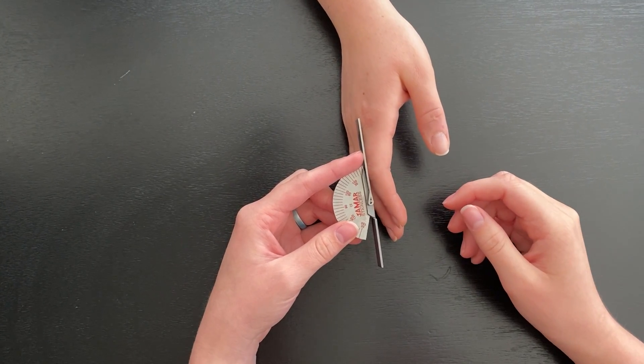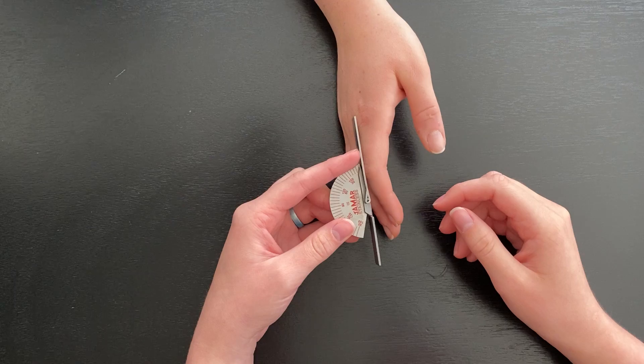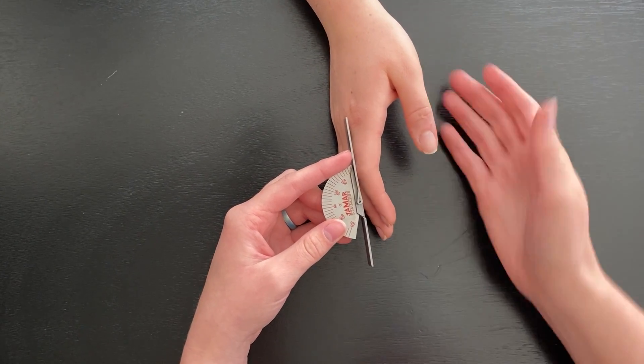You will have the patient seated at a table with their upper extremities on a flat surface with the ulnar side down.